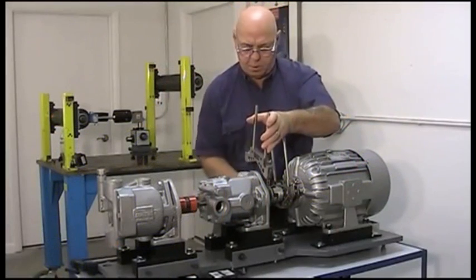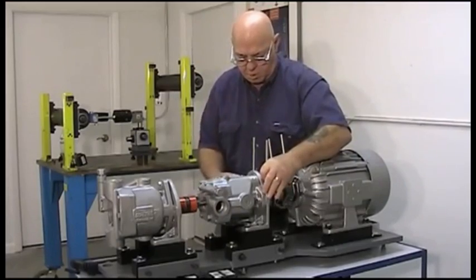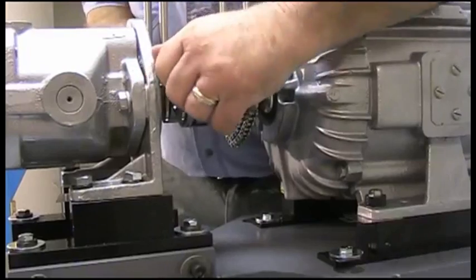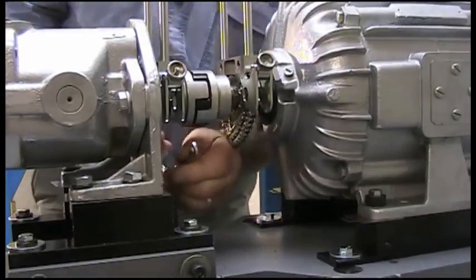First, we'll start with the hardware. Simply place each bracket on the shaft and wrap the chain around the outside diameter, sliding the link on the pin and tightening the knob. Notice that the extra chain can be folded up using the magnetic tip to help protect the equipment.